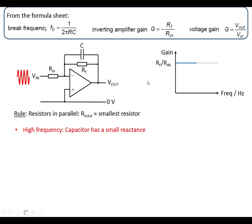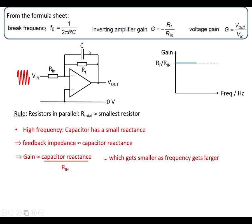At high frequencies, the capacitor has small reactance, which means this is going to be the dominant resistance. So the gain is going to be the reactance of the capacitor divided by Rin, and this gets very small at high frequencies, which means the gain gets very small.